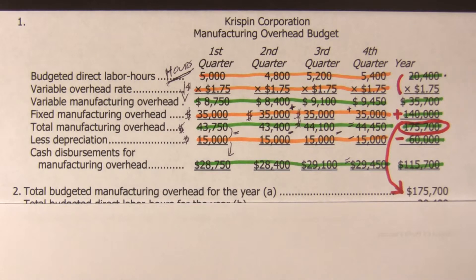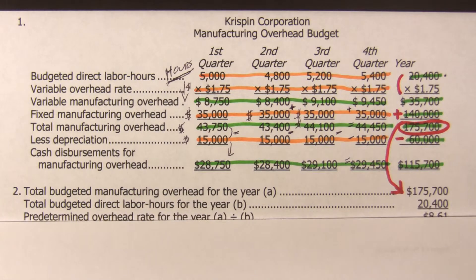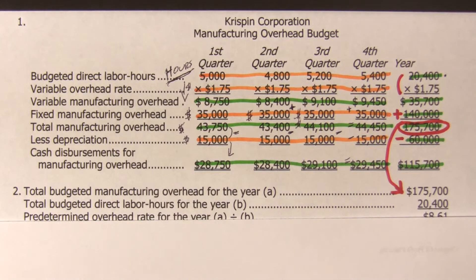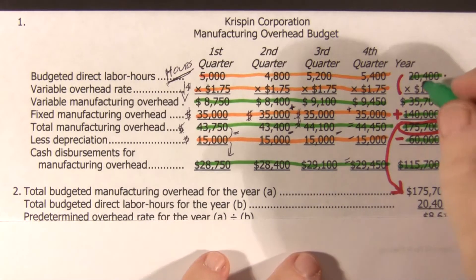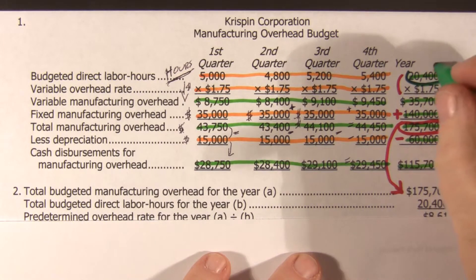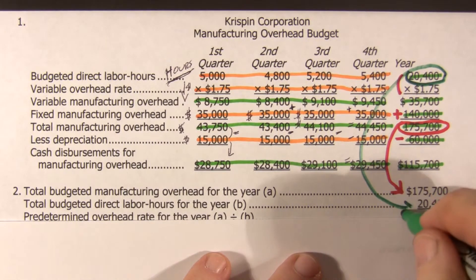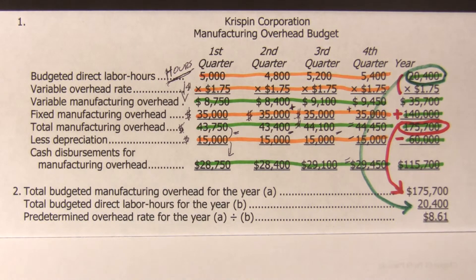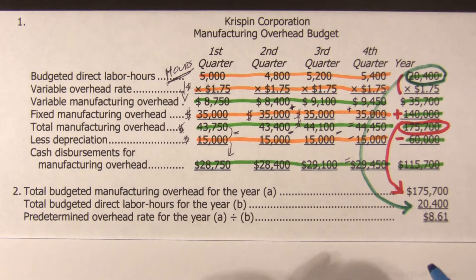Then it says: what should our total overhead rate be? We take our total budgeted direct labor hours and divide them into the total overhead — fixed and variable — and the total hours, and when we divide that, we come up with our predetermined overhead rate for the year.